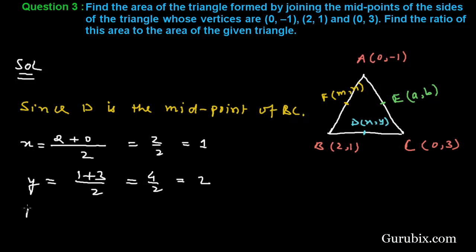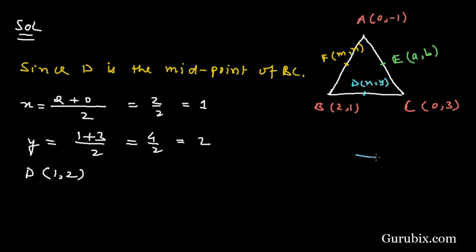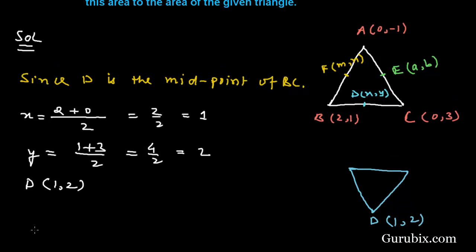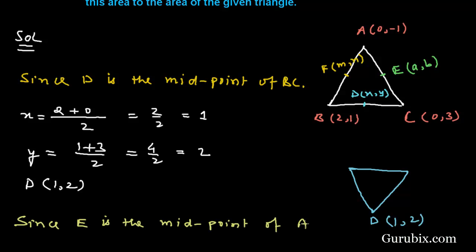Let us draw the rough sketch of triangle DEF. This is D, and we have calculated the coordinates of D as (1, 2). Now we shall find the coordinates of point E, since E is the midpoint of AC.